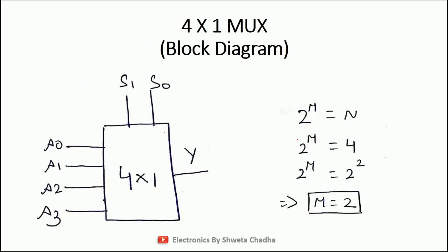The next example is the 4 cross 1 multiplexer. 4 cross 1 means we have a total of 4 input signals: A0, A1, A2, and A3. Using the formula with N equal to 4, which is 2 raised to power of 2, the number of select lines M equals 2. So we have two select lines termed as S1 and S0, with one output Y.